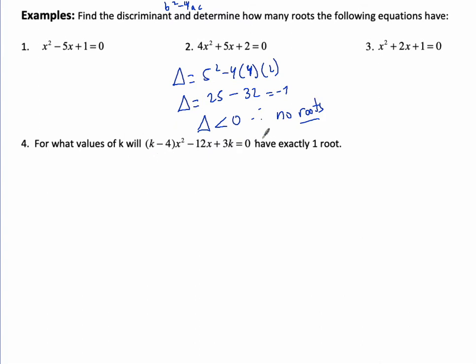Then we have problems like this where it tells us to find out what values of k will give you exactly one root. That means the discriminant has to equal 0. So we can just do b squared minus 4ac equals 0, and then plug in those values. So we have negative 12 squared minus 4 times a times c is 3k.